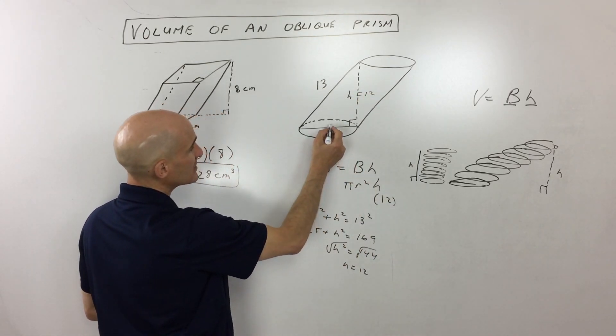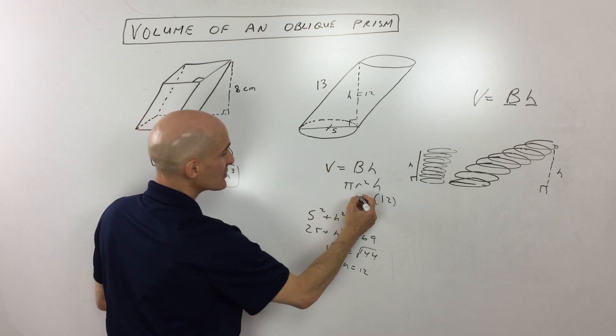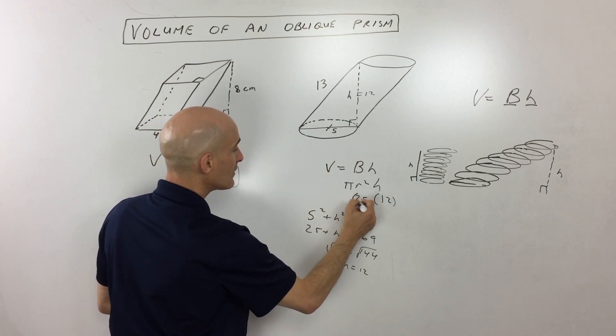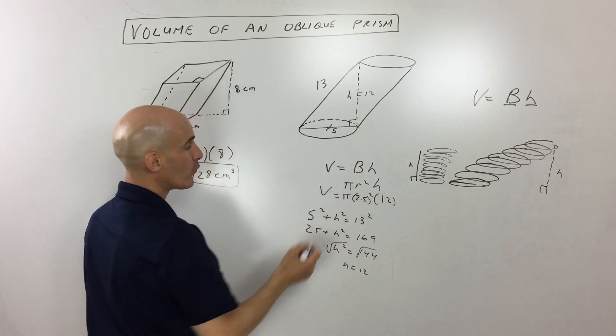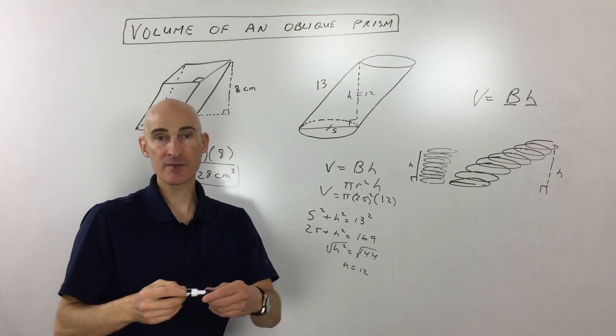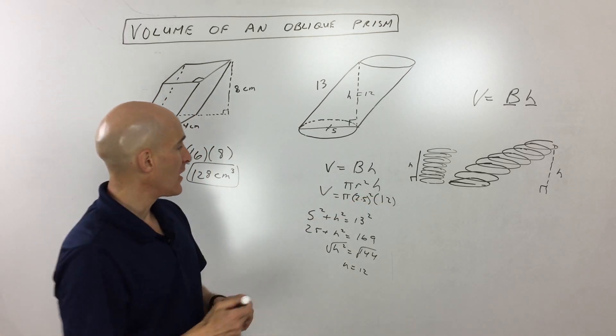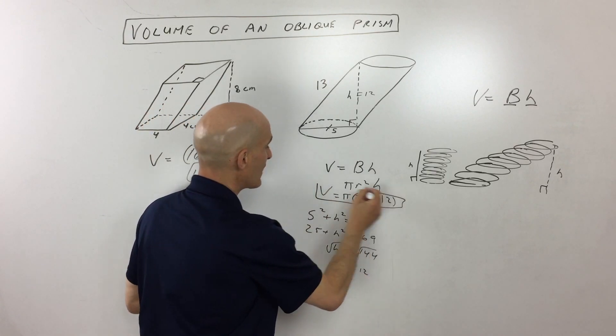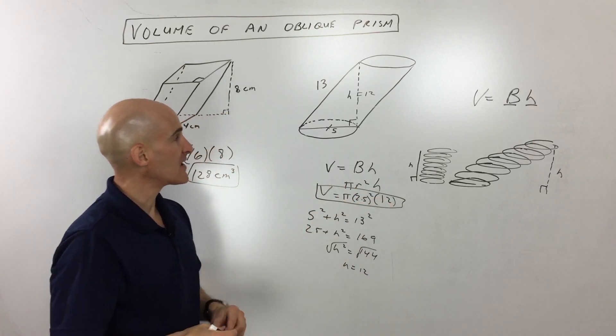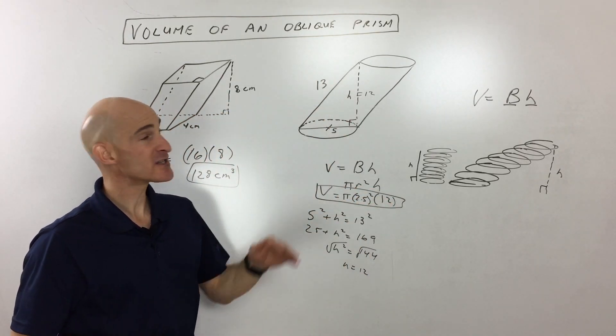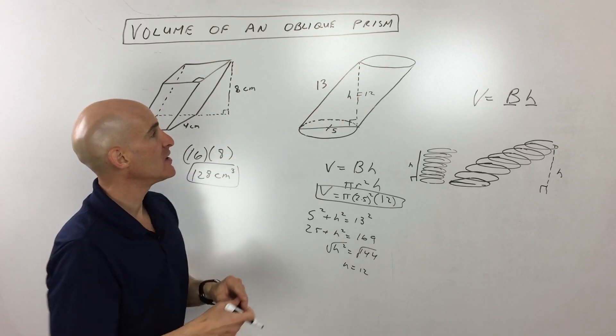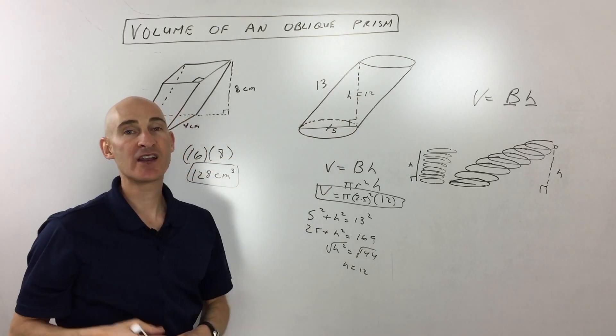We know the height is 12. We know that the radius is half the diameter, so that's 2.5 squared times pi, which is 3.14. And if we multiply that together, that's going to give you the volume. And it doesn't matter that it's on an angle like that, just make sure you get that perpendicular height and you've got it.